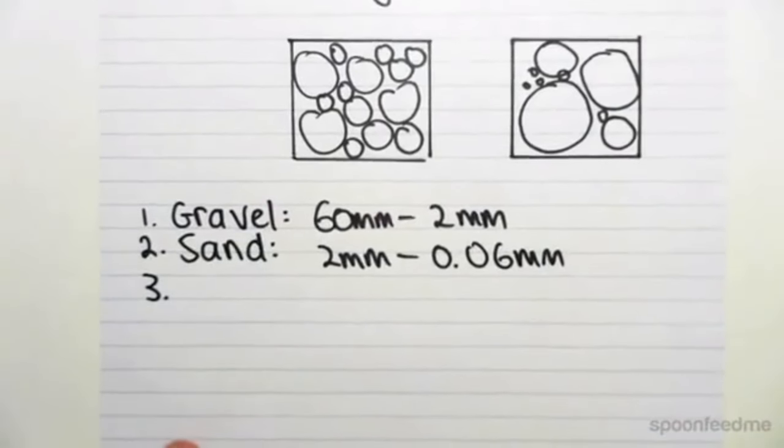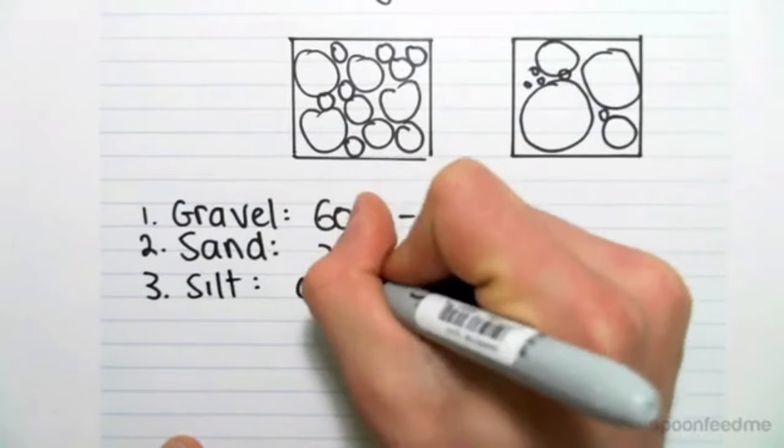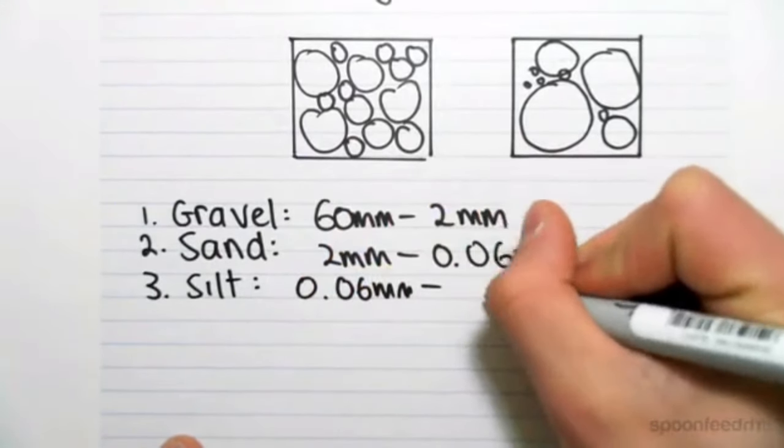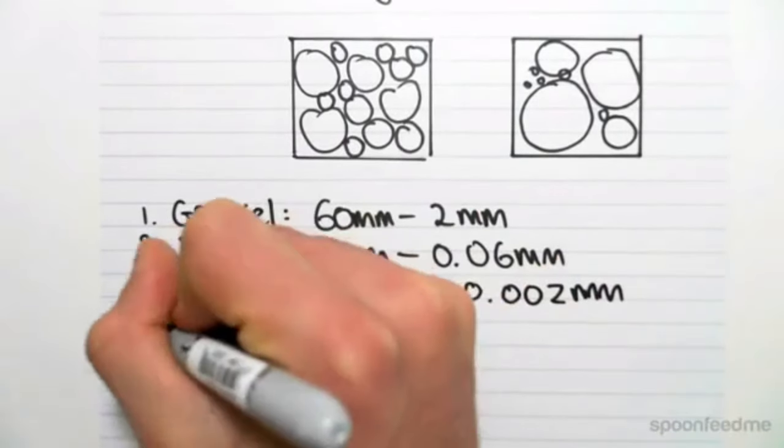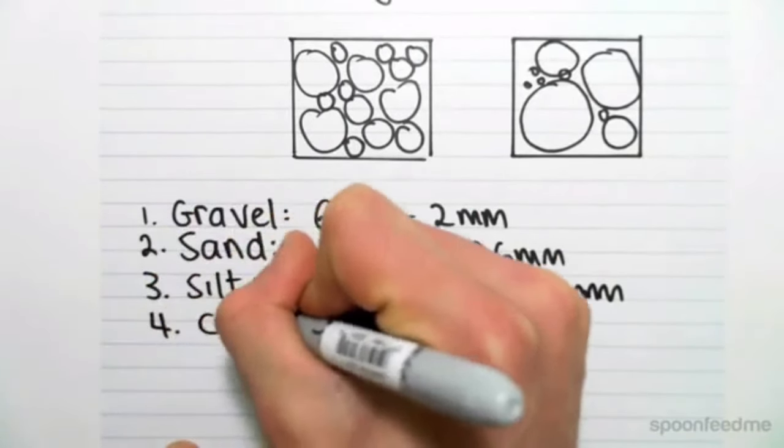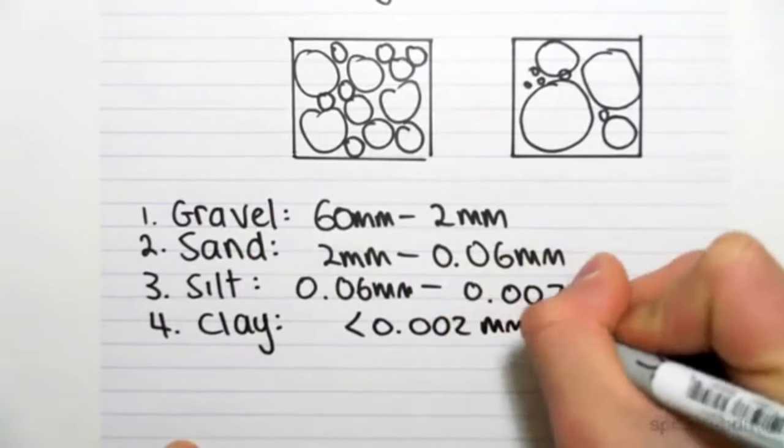We then have a silt, which has particle sizes from 0.06 millimeters to 0.002 millimeters. And then the last one we have is a clay, which is less than 0.002 millimeters.